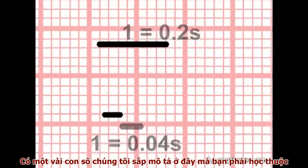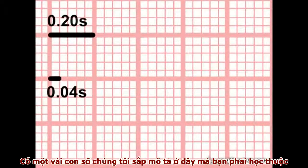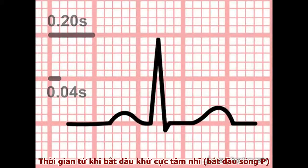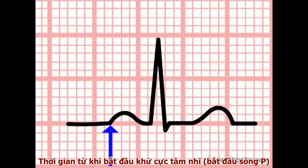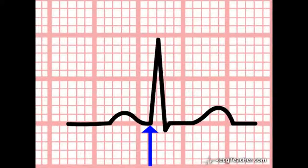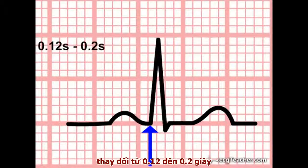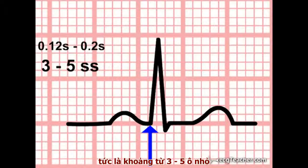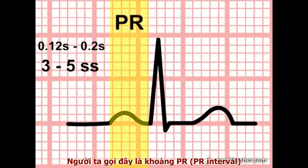There are a few numbers coming up now which you simply must learn. In a normal heart, the time between the onset of atrial depolarisation — the beginning of the P wave — and the onset of ventricular depolarisation — the beginning of the QRS complex — varies between 0.12 and 0.2 seconds, or between three and five small squares. This is the PR interval.